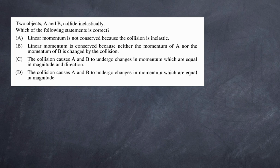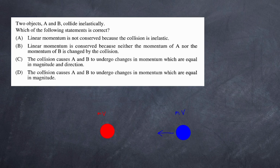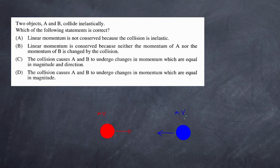We have a red ball and a blue ball, each with their own momentum — mass times velocity. When they collide, they apply a force on each other in opposite directions: the red ball pushes the blue ball one way, and the blue ball pushes the red ball the other way. Those forces are equal due to Newton's third law, meaning the change in momentum — force times time — is the same value but in opposite directions. As a result, total momentum remains the same before and after; they apply the same impulse, the same change in momentum.